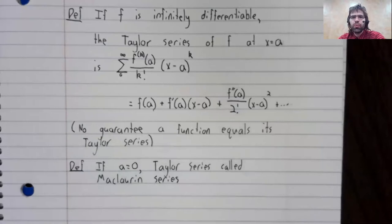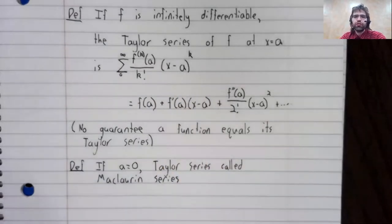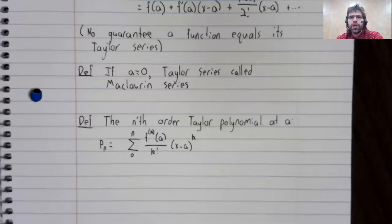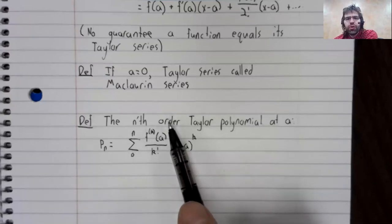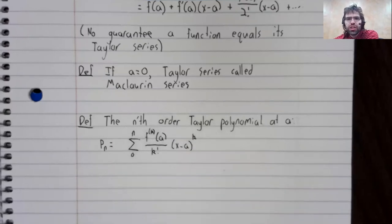One more definition. The partial sums of this infinite series get their own name. All I really have to say about this is to take note of the word order. This is not necessarily an nth degree polynomial. Its degree is less than or equal to its order.